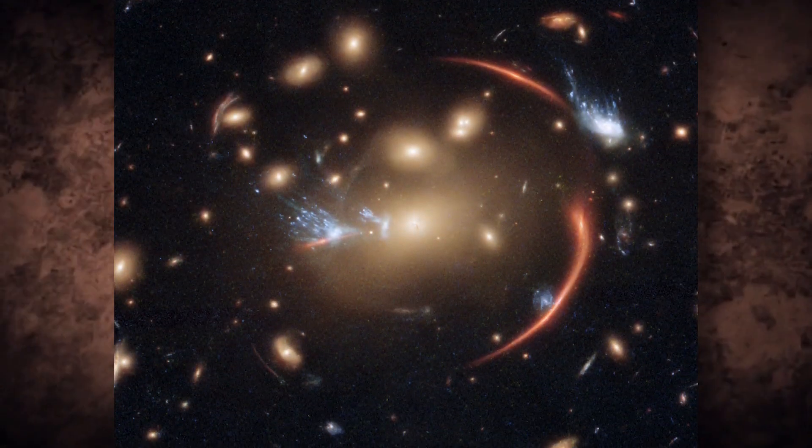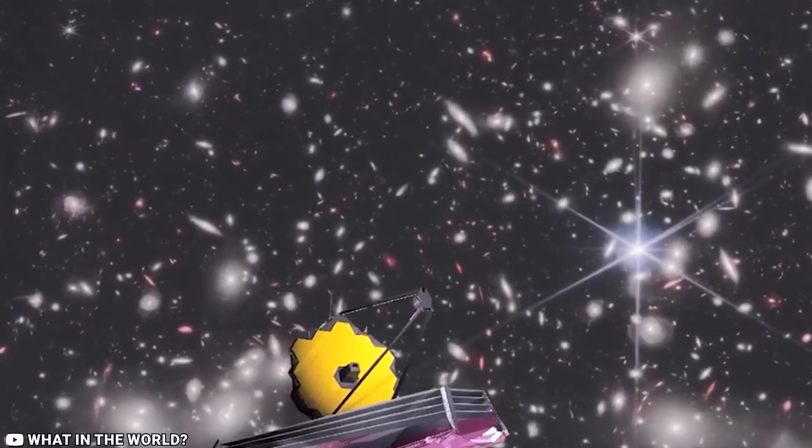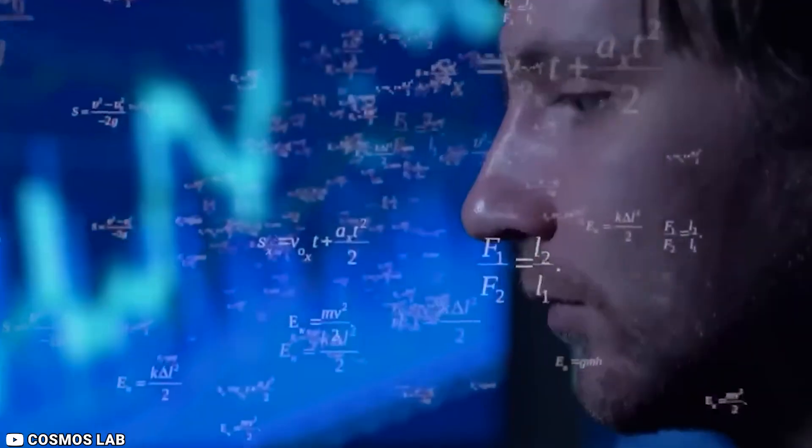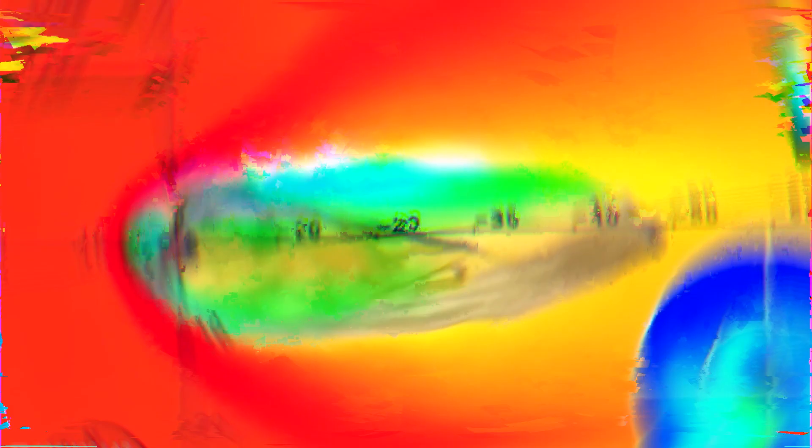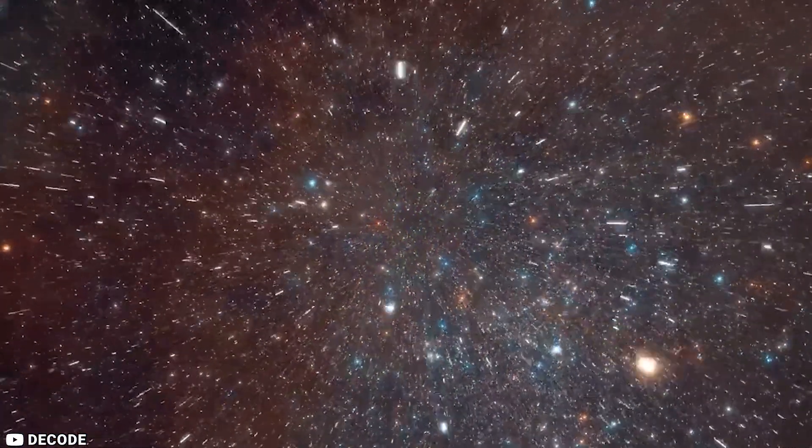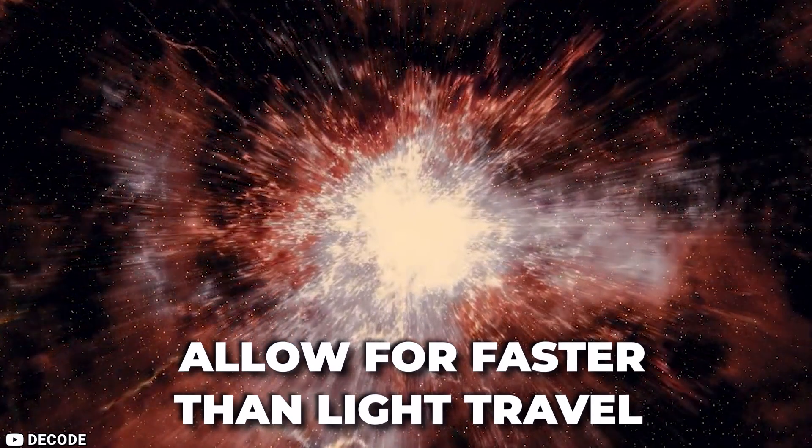So what is a warp bubble? Imagine being able to travel through space in a bubble that can bend time and space to your will, propelling you forward at speeds greater than that of light, without breaking any laws of physics. This is the idea behind a warp bubble, which creates a pocket of contracted space in the front and expanded space in the back to allow for faster-than-light travel.